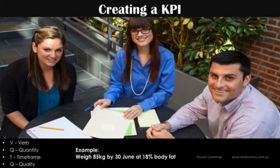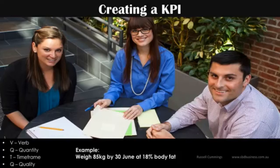So the verb is 'weigh', the quantity is 85 kilograms, the time frame is by 30th June, and 18% body fat is the quality measure. Sometimes you won't have both a quality and a quantity — that's okay. It might just be 'weigh 85 kilos by 30 June' or 'at 18% body fat by 30 June'. But they're more powerful when you combine them, because just weighing 85 kilograms by itself may not be enough — you may actually want to get your body fat down too.